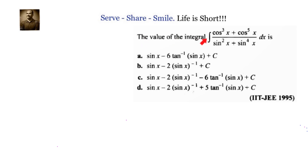The value of the integral given to us is cos³x plus cos⁵x divided by sin²x plus sin⁴x. In this expression, the numerator is entirely in terms of cos and the denominator is entirely in terms of sin.